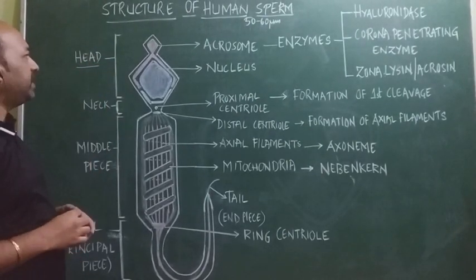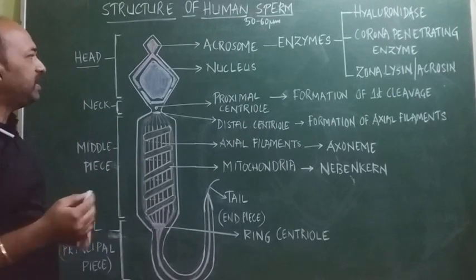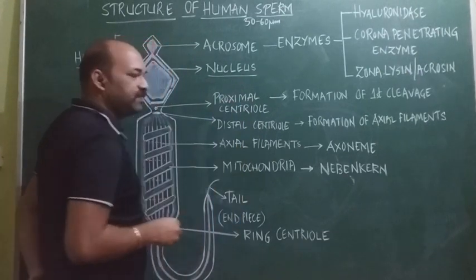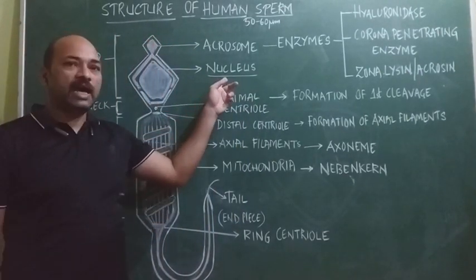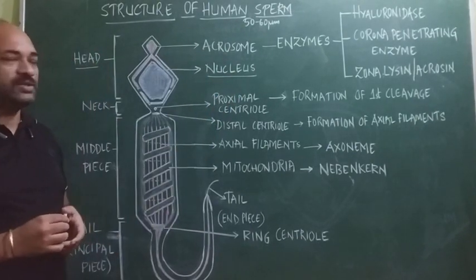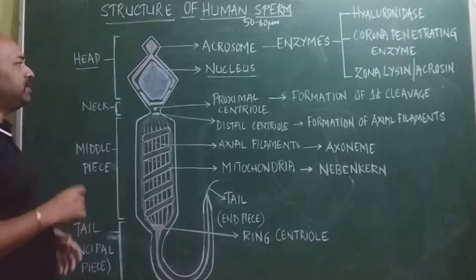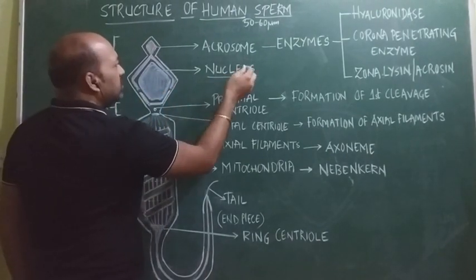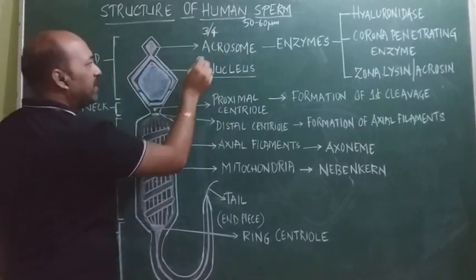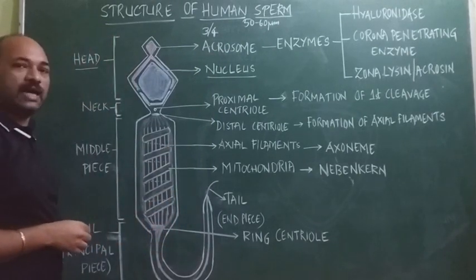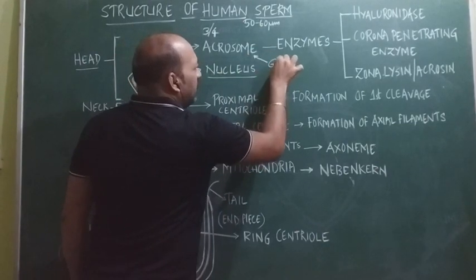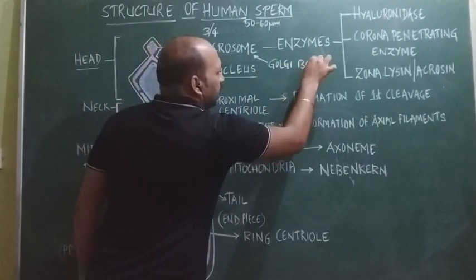The first part of the sperm is the head, which consists of mainly two parts. The first is the nucleus, which generally consists of the haploid set of paternal chromosomes involved in the formation of the zygote and thereby the embryo. Surrounding three-fourths of the nucleus is a cap-like structure called the acrosome, which is derived from a cell organelle called the Golgi body.